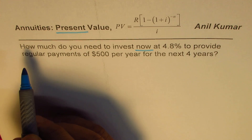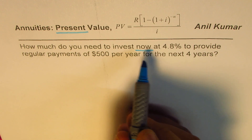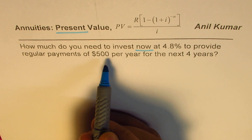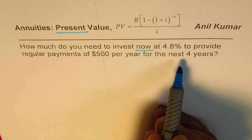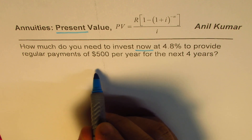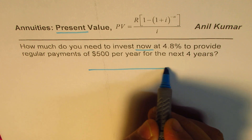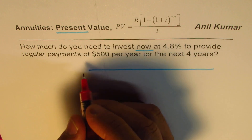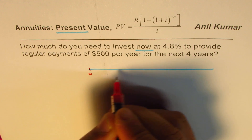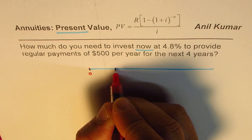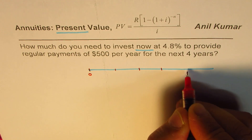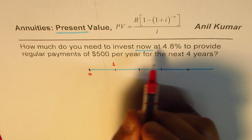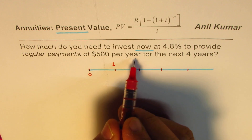The question asks: how much do you need to invest now at 4.8 percent to provide regular payments of $500 per year for the next four years? Let me show a timeline here for four years. Now is at present — we'll call it zero — and these are our years: one, two, three, and four.